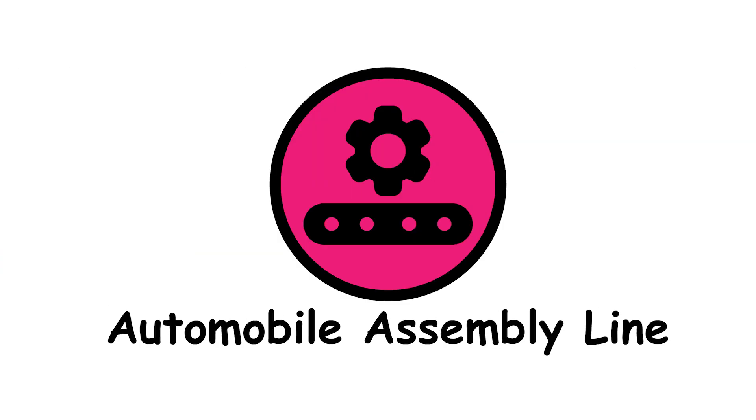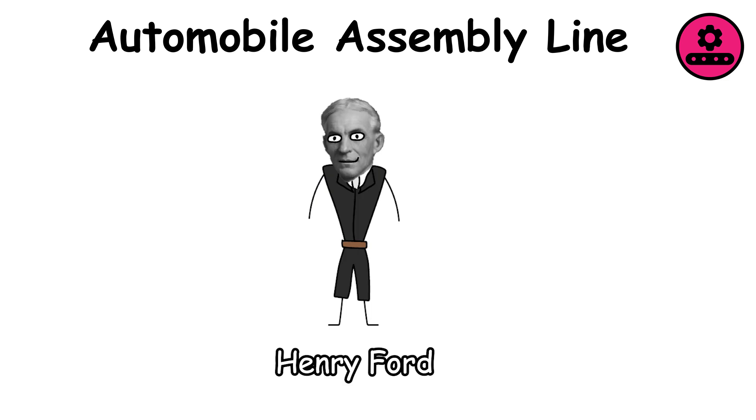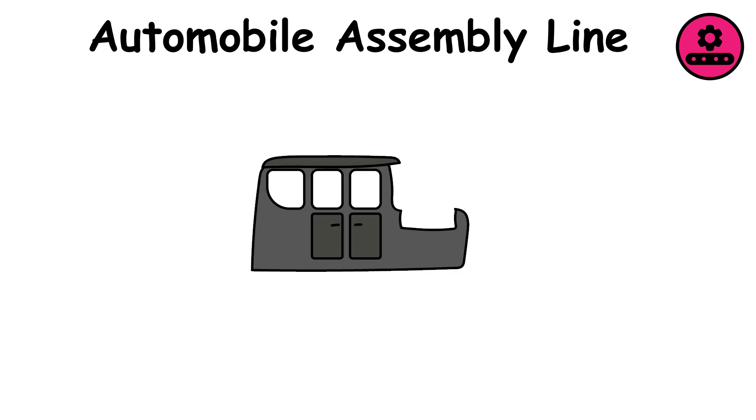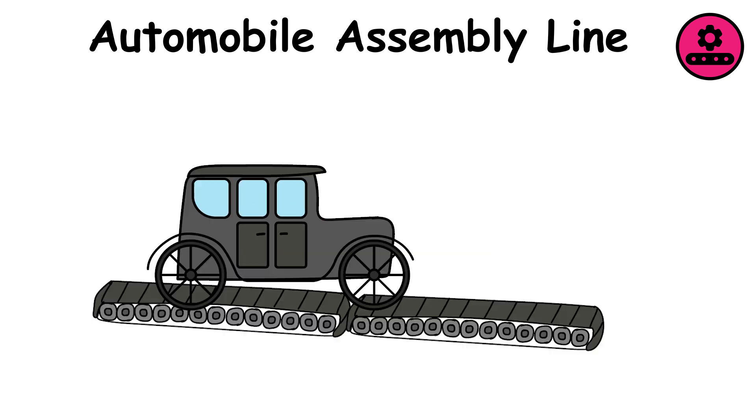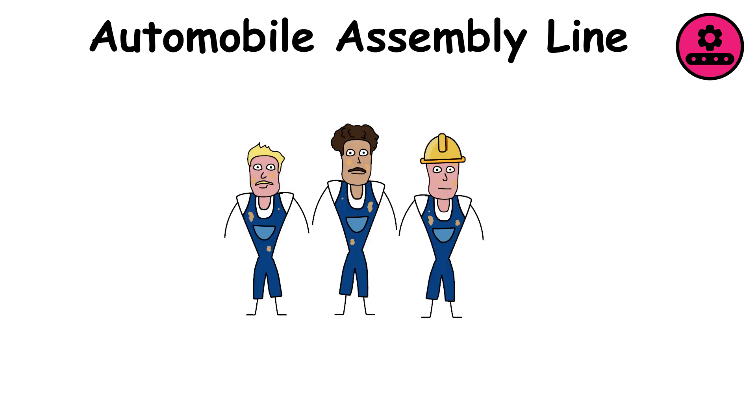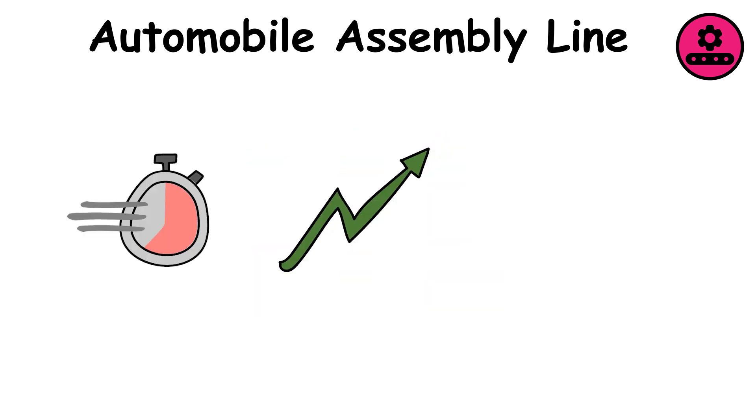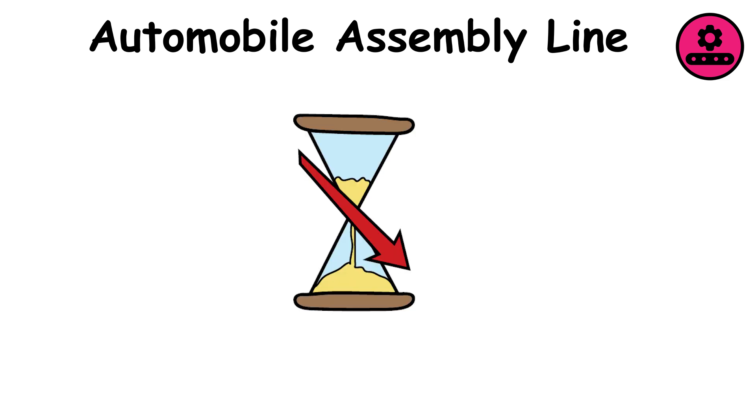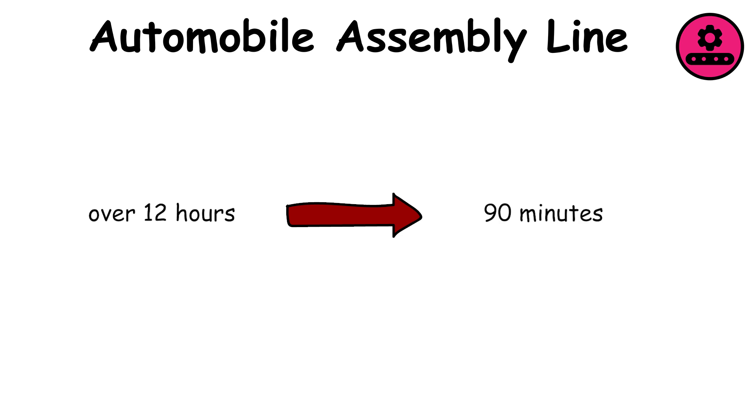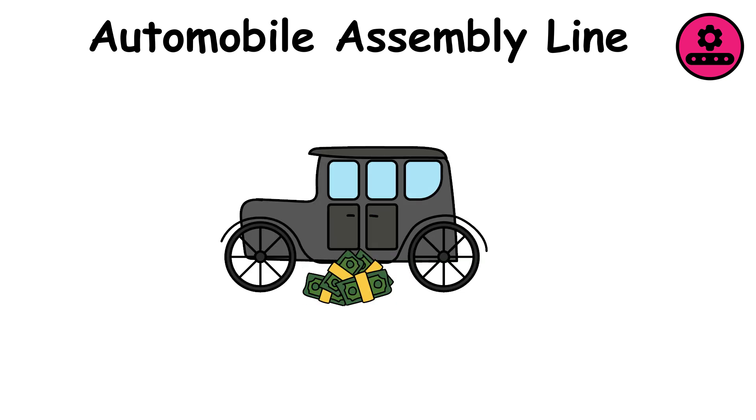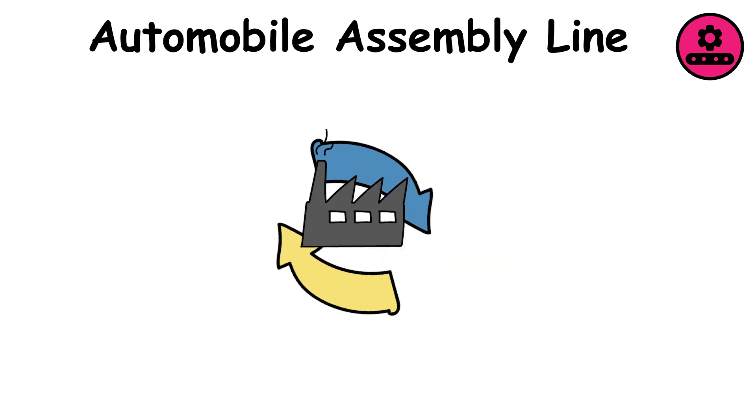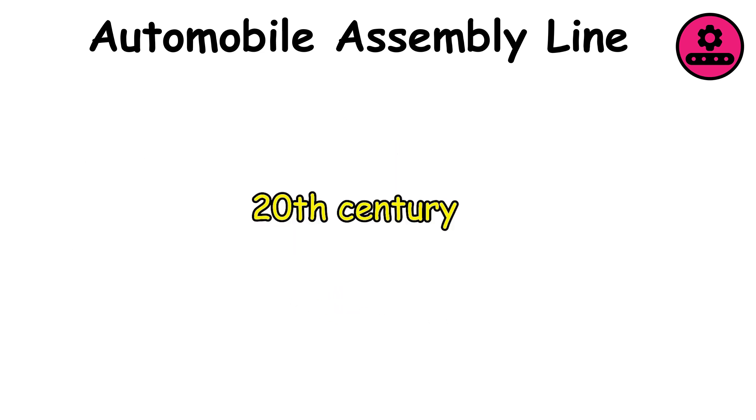Automobile Assembly Line. In 1913, Henry Ford introduced the first moving conveyor belt assembly line in his automobile factories that allowed cars to be built piece by piece as they moved down the line. Instead of one worker building an entire car, each person specialized in a single task, dramatically increasing speed and efficiency. This innovation reduced the time to assemble a Model T from over 12 hours to about 90 minutes. It also made cars far cheaper, allowing ordinary Americans to afford them for the first time. The assembly line transformed the industry and set the model for mass production in the 20th century.